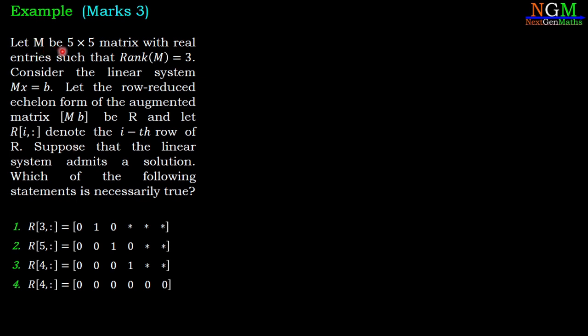Example: Let M be a 5 × 5 matrix with real entries such that rank(M) = 3. Consider the linear system Mx = b. Let the row-reduced echelon form of the augmented matrix [M|b] be R, and let Ri: denote the ith row of R.